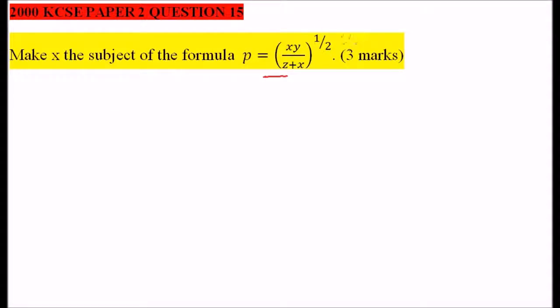We can start by squaring both sides. The two cancels with that power of two. So we have p squared equals xy divided by z plus x.